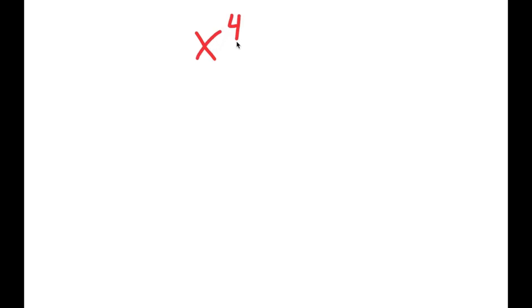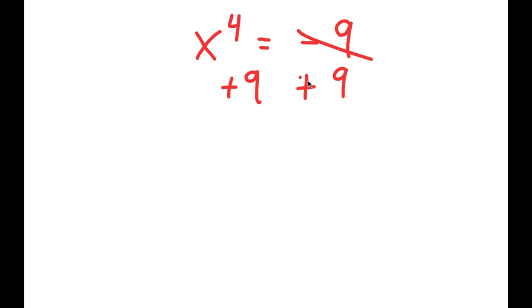So for this video, I'm going to be solving the equation x to the power of 4 is equal to negative 9. What I'm first going to do is add 9 on both sides, so these two cancel out, and I get x to the power of 4 plus 9 is equal to 0.